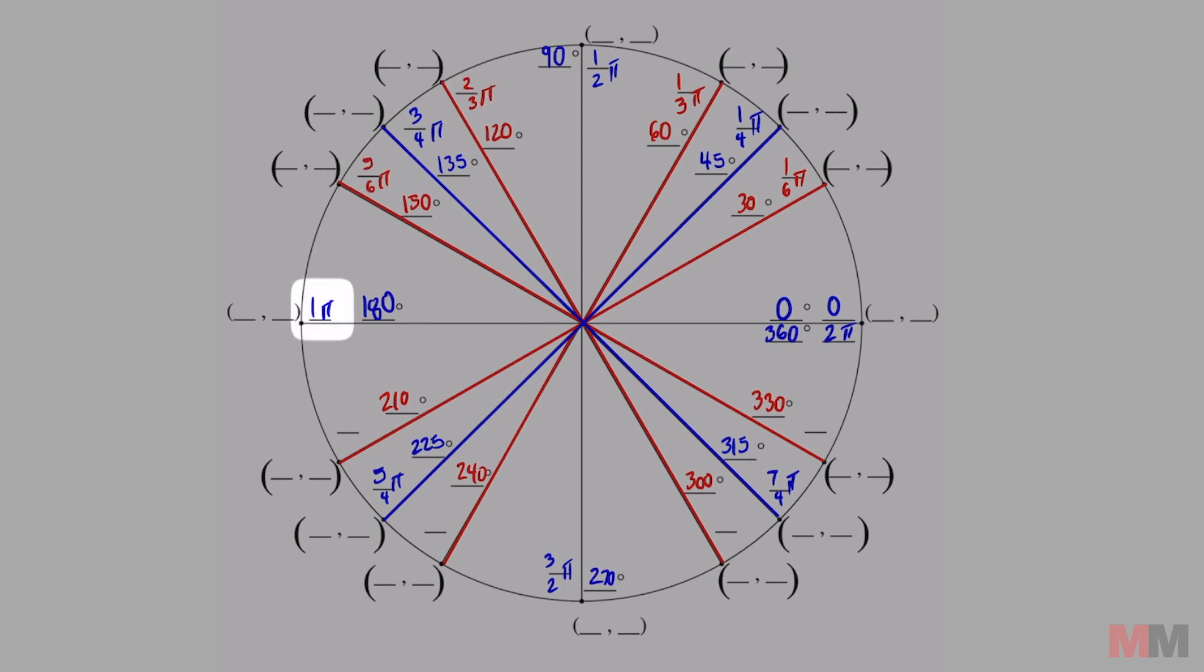We're almost there. I know this is getting repetitive. Six over six is one. Seven over six. Eight over six simplifies to four-thirds pi. Nine over six. Ten over six simplifies to five-thirds pi. Eleven over six. And now we're finally done with labeling degree measurements and radians.